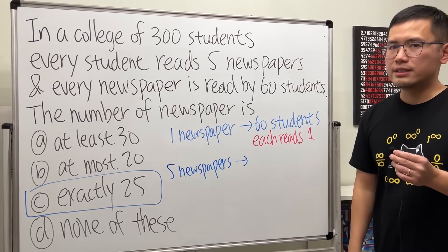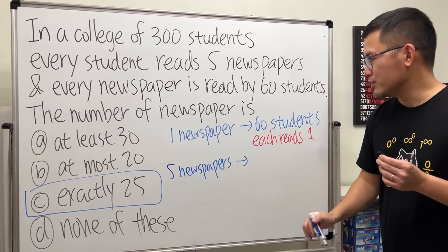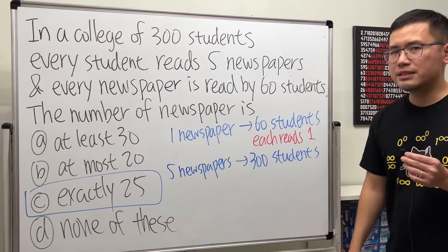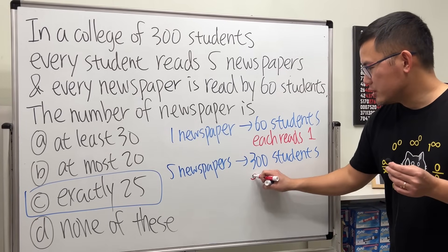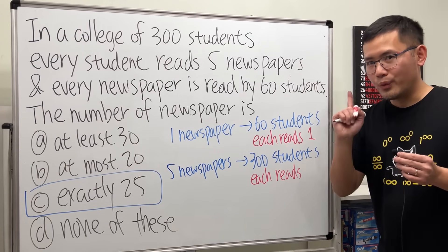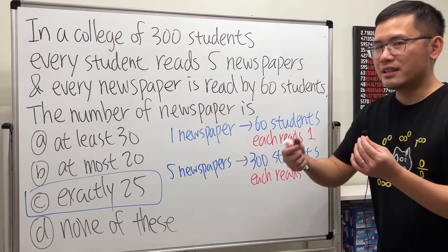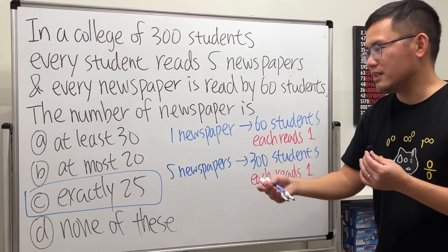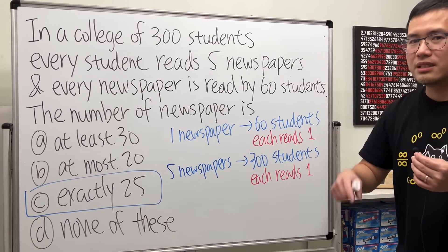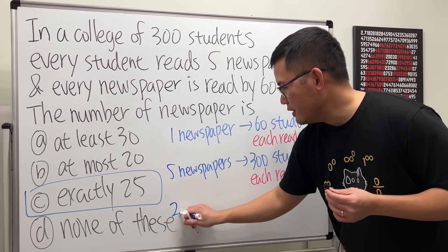...then how many students can we satisfy? Five times 60 — we can satisfy 300 students, but each student can only read one newspaper still, because the first newspaper is for 60 students, the second for another 60, the third for another 60, and so on. So five different newspapers, each read by 60 different students. Now if I multiply by five again, we get 25 newspapers.